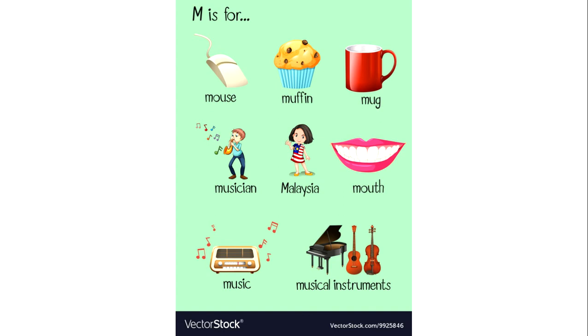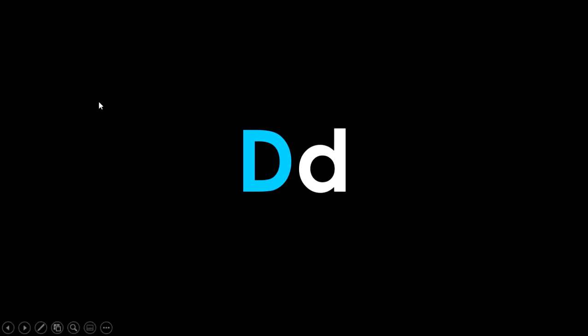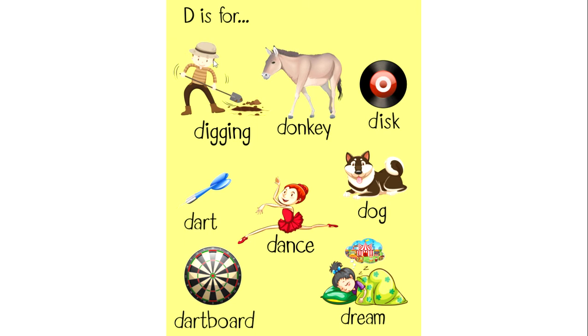This letter is M, its name is M, and its sound is M. Here are some words that have the M sound at the beginning. The final letter is D. Its letter D — remember the capital letter D looks like this, and the lowercase letter D curves to the left. Its sound is D. Now look at these words — they have the D sound. Here we have the capital letter D, and here we have the lowercase one.